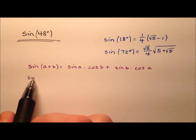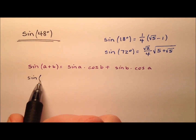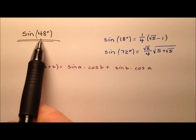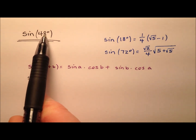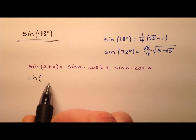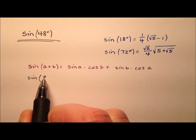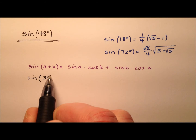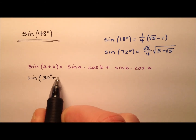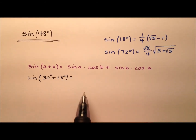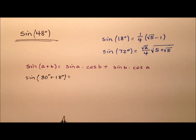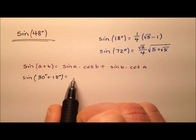So we have the sine of 48 degrees, and we want to use two angles that are nice to work with that add up to 48 degrees. I'm going to go ahead and use 30 degrees and 18 degrees, and that'll turn into this expansion.